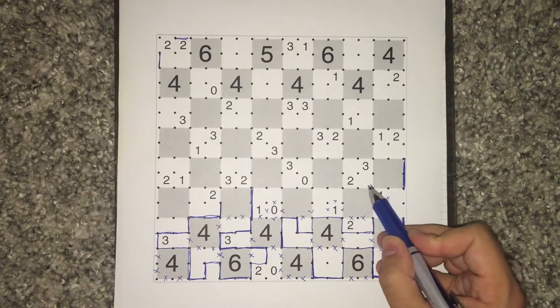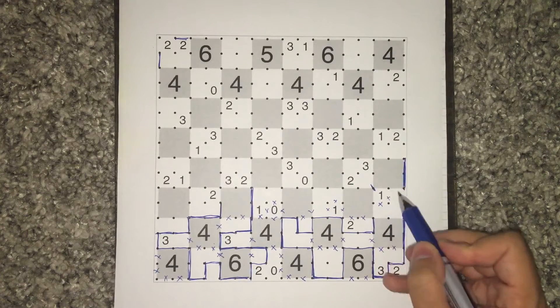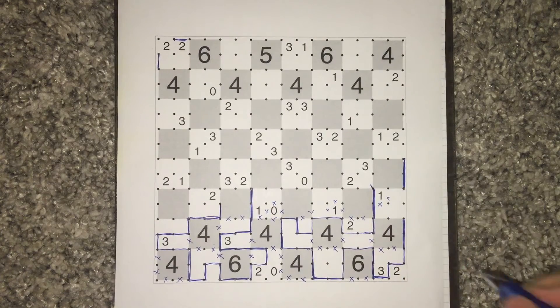Further, knowing that a loop comes through this corner, we can work out these cells. But if this comes over to the right, it's going to force these ends to connect. So we can come down like this.